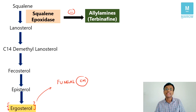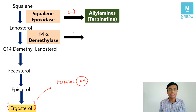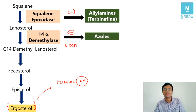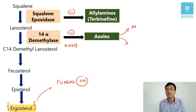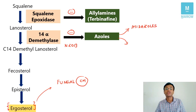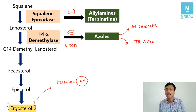Lanosterol is converted to 14-demethyl lanosterol by the enzyme 14-alpha-demethylase — this was the subject of a NEET 2019 question. The drugs which inhibit 14-alpha-demethylase are the azole group of drugs. In pharmacology, azoles are further divided based on the number of nitrogen atoms within the ring: two nitrogen atoms — imidazoles; three nitrogen atoms — triazoles.